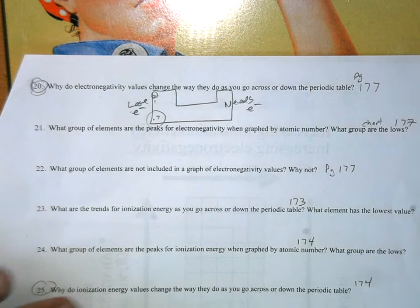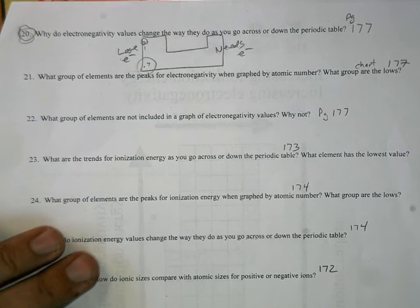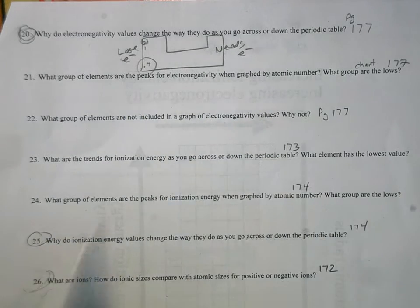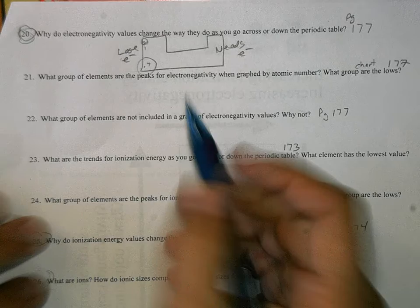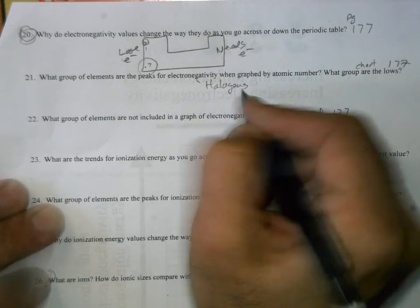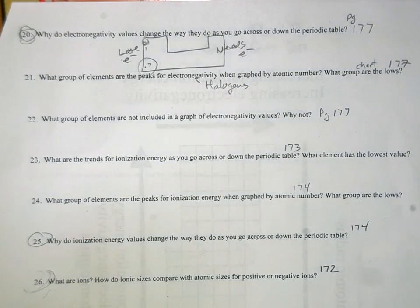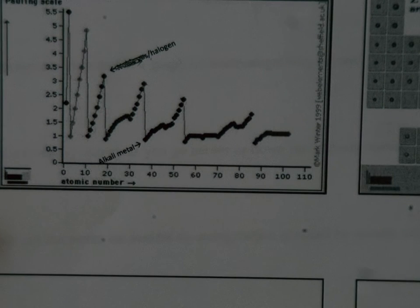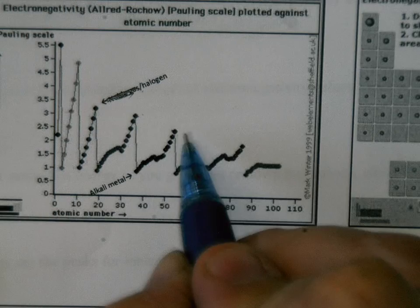Number 21 — still on page 177: what group of elements are the peaks for electronegativity? The peaks for electronegativity are going to be the halogens. Noble gases don't need to attract electrons. When we graph these, there should be a little skip where the noble gases are not graphed. So halogens are going to be the peaks for electronegativity.